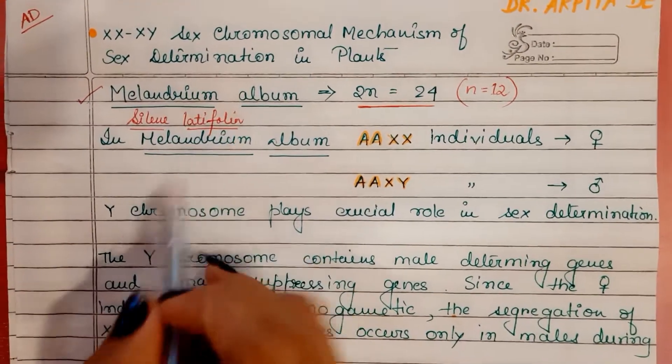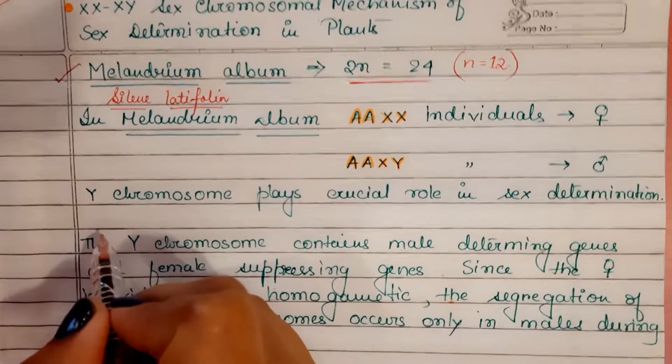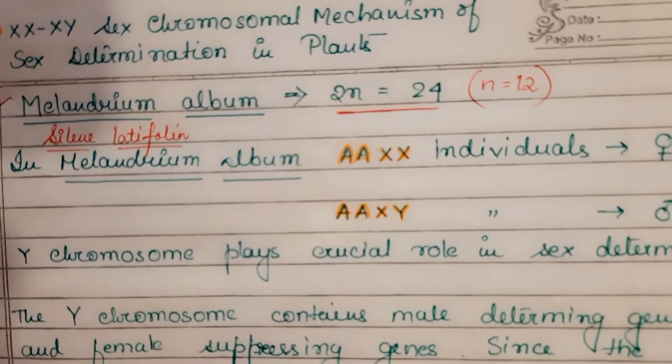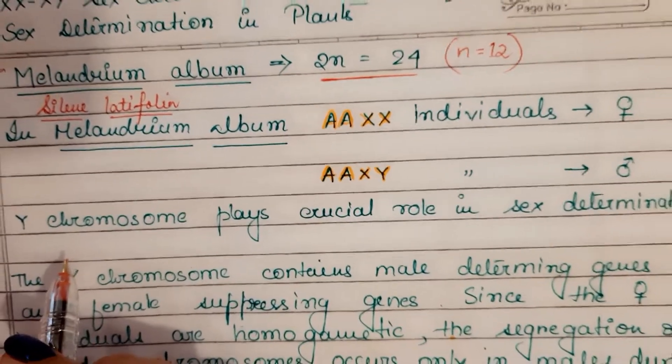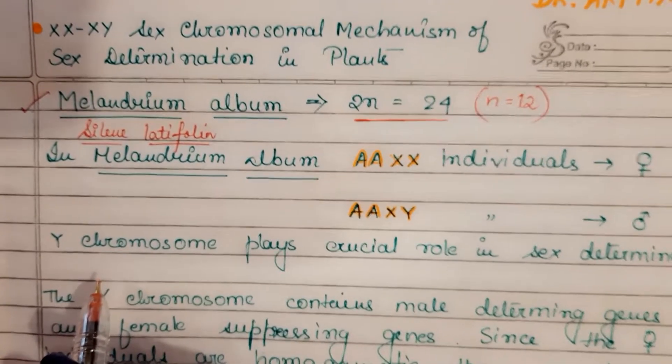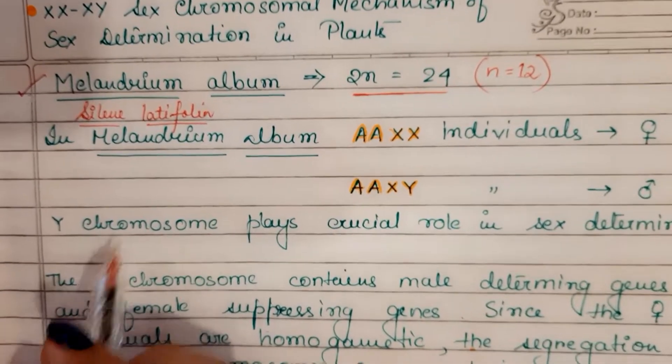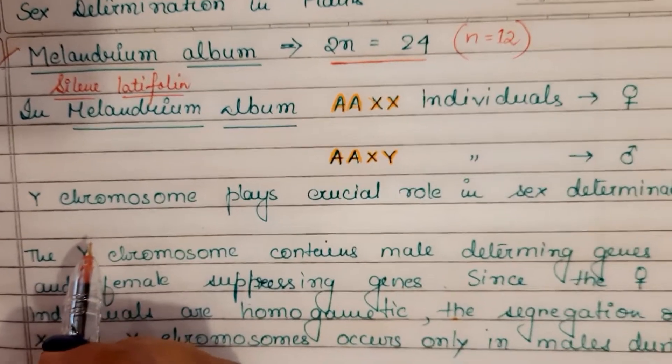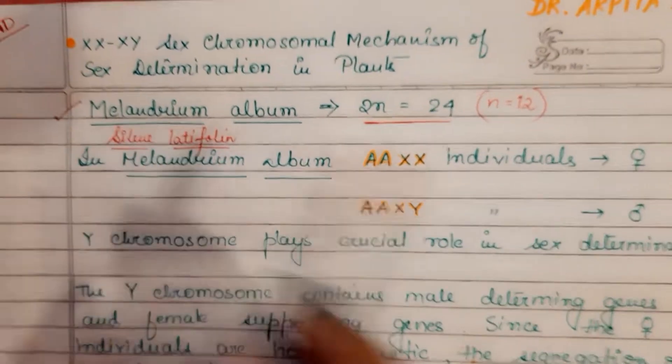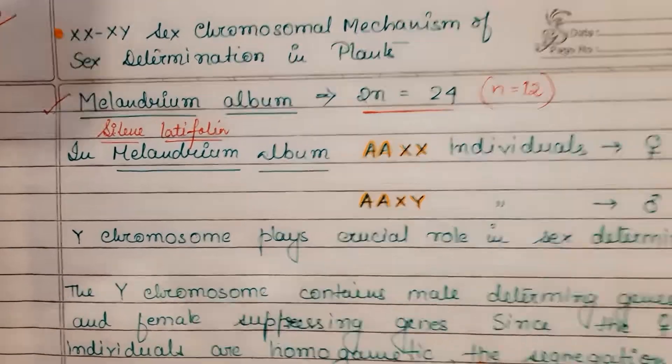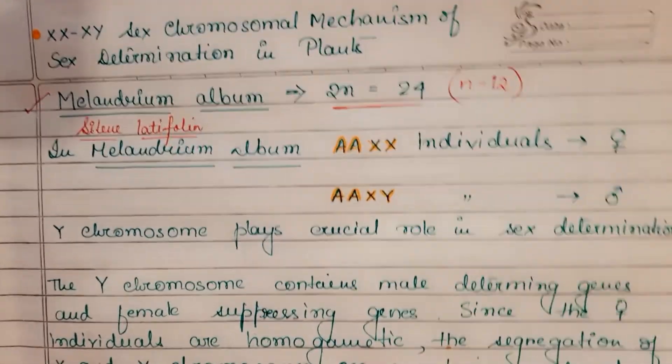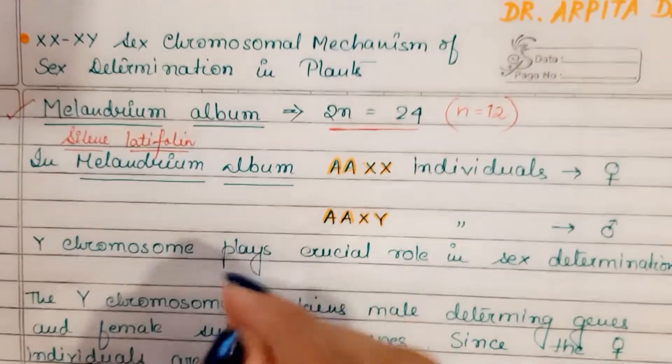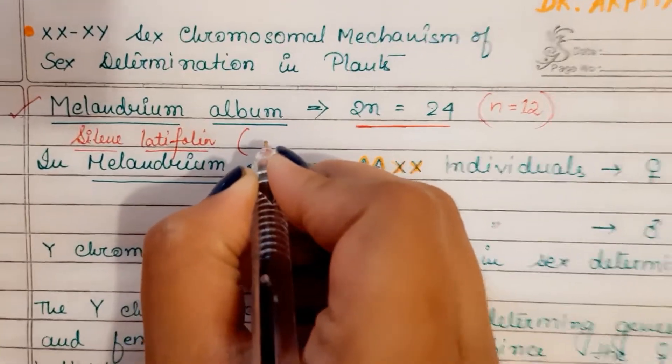The majority of flowering plants that we see around us are monoecious, meaning male and female flowers are born on the same plant. Only 6 percent of flowering plants or angiosperms are dioecious, and this is one of them. Our model plant today is a dioecious plant belonging to the family Cariophyllaceae.